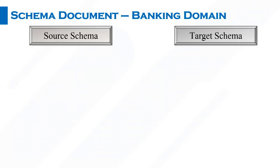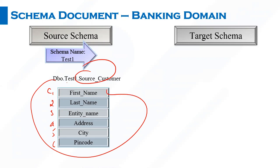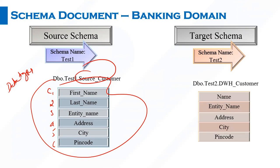In terms of schema, you also need to know the source schema. For example, the source customer table has six columns with their data types. On the target side, there are only five columns — because as part of the transformation, two column names are combined into one. So as part of the BRD, you should also look for the schema on the source and the schema on the target. That's how business requirements look in a data warehouse project.